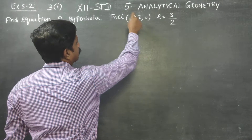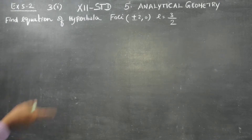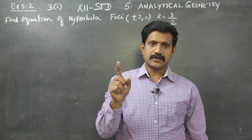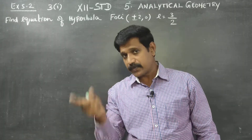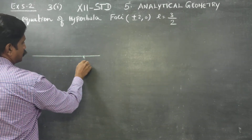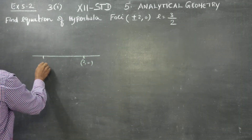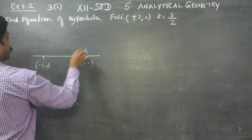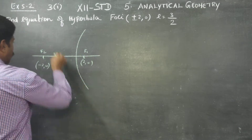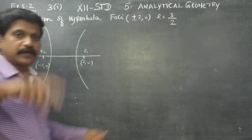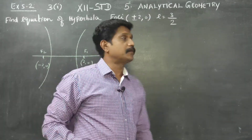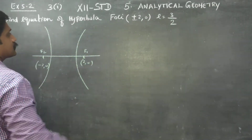The foci are fixed at (2,0) and (-2,0), so they are on the x-axis. The hyperbola is in horizontal shape and will be symmetrical about the x-axis. That is why the foci are at (2,0) and (-2,0).